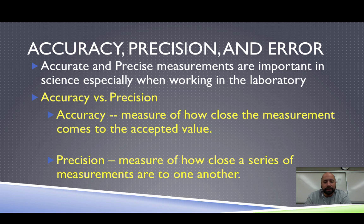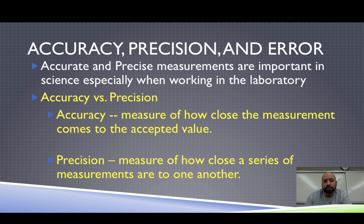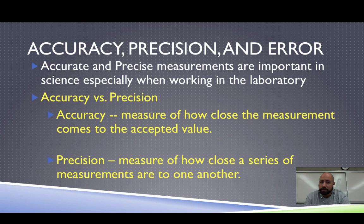Precision, on the other hand, is how often you can do something over and over again — it's how close your measurements are to each other. This is being able to weigh something repeatedly and get the same exact answer, or measuring the length of your desk and getting that measurement over and over again. It's the repeatability of your measurements. Accuracy is how close you are to what you wanted; precision is being able to do that over and over again. You want to get both.